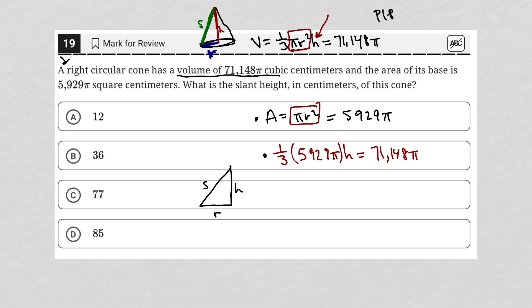I'm going to go to my calculator and figure out what is 5,929 divided by 3. So I have 1,976.33 repeating, and then we'll still include my π here, and h equals 71,148π. Of course, I'm going to now divide both sides by this value here. So I'm going to take the 71,148, divide it by 1,976.33 repeating. So I get 36 as my answer. My πs cancel out automatically, so I end up with h equals 36.